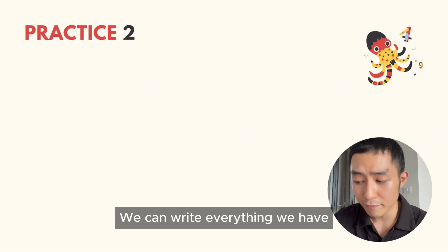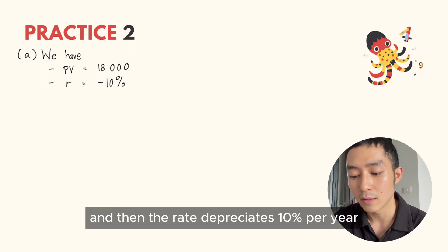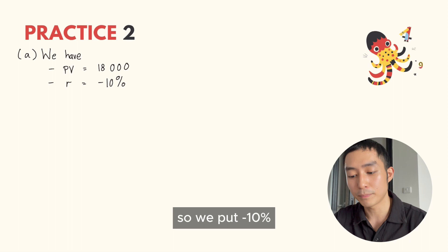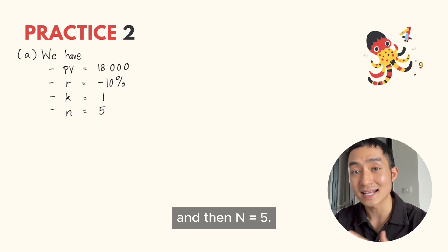We can write everything we have, which is a present value of $18,000, and then the rate depreciates 10% per year, so we put minus 10%. Then K is 1 because it's annual, and N will last for five years.